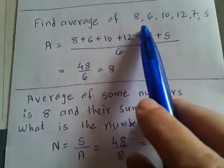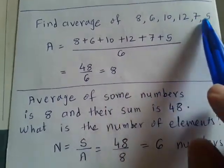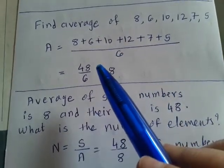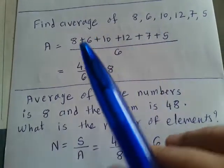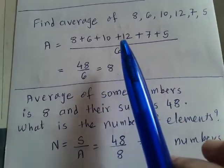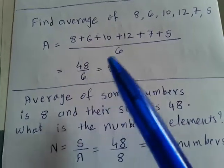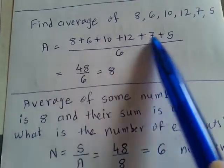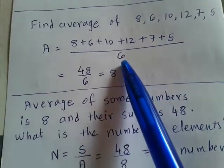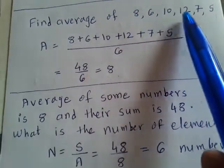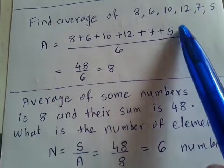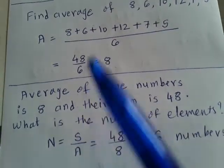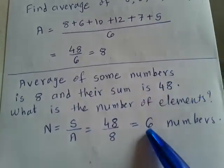Let's see a few examples. Find the average of 8, 6, 10, 12, 7, 5. You may think these numbers are very easy and in an exam we are going to get tough numbers — yes, I am using these numbers just for the sake of explanation. Later on we will solve difficult examples also. For finding average we need to add all these numbers and divide by the number of elements. There are 6 elements. So 48 upon 6 — the answer is 8.